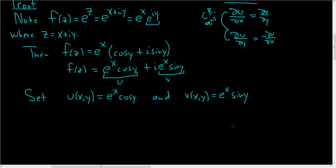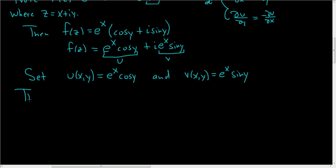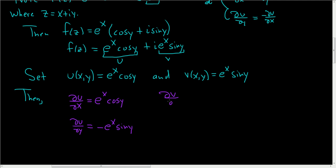Now what we'll do is compute the first partial derivatives of u and v. So ∂u/∂x: we're treating y as constant, so the derivative of e^x is e^x, giving e^x cos y. And ∂u/∂y: we treat x as constant, so e^x is constant, and the derivative of cosine is negative sine, so this is -e^x sin y. Likewise, ∂v/∂y: here we're treating e^x as constant, so it's e^x and the derivative of sine is cosine, giving e^x cos y. And last but not least, ∂v/∂x: we treat sin y as constant, so this is simply e^x sin y.